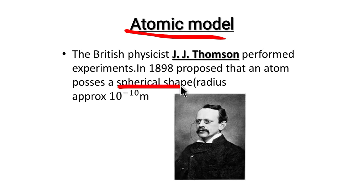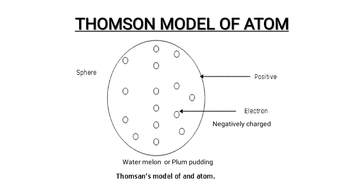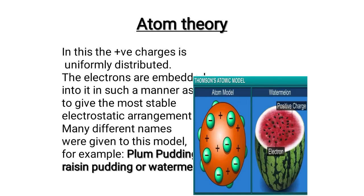It's called J.J. Thompson's first atomic model. The radius of the atom is 10 to the power minus 10 meters. This is a schematic diagram of the atomic model. You can see the formation of the atom.